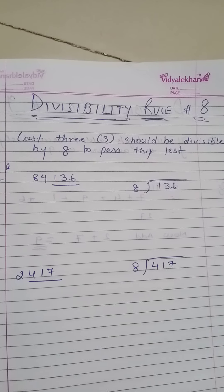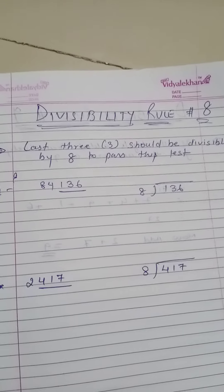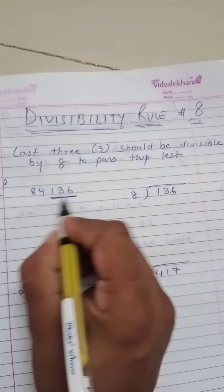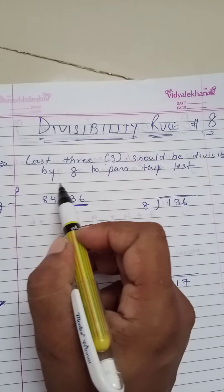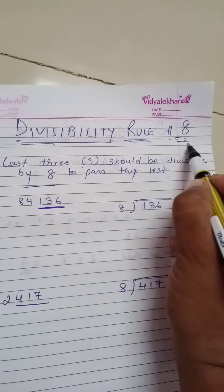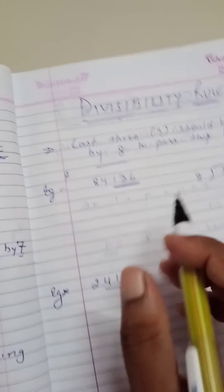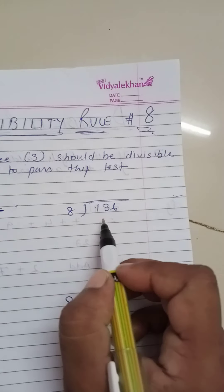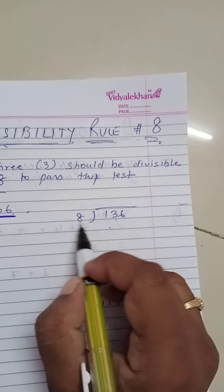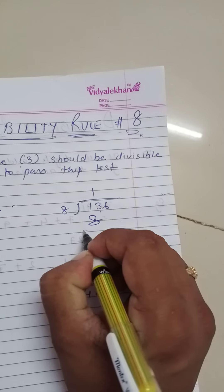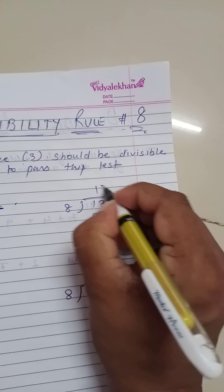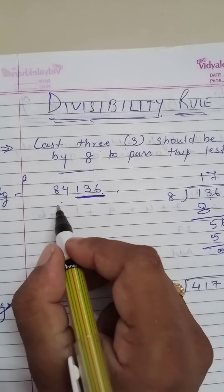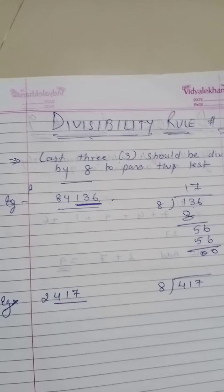The divisibility rule of 8: you have to look at the last 3 digits of any given number. If the last 3 digits are divisible by 8, then the divisibility rule of 8 applies. For example, take 84136 — the last 3 digits are 136. Dividing 136 by 8 gives 17, so we can clearly say that 84136 is divisible by 8.